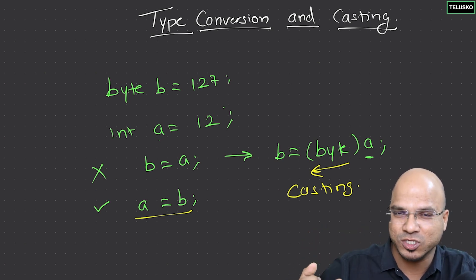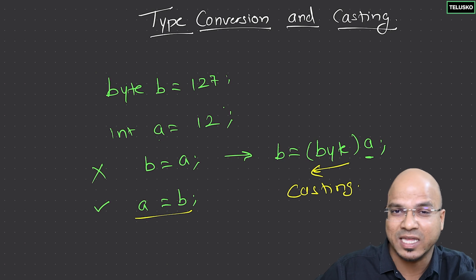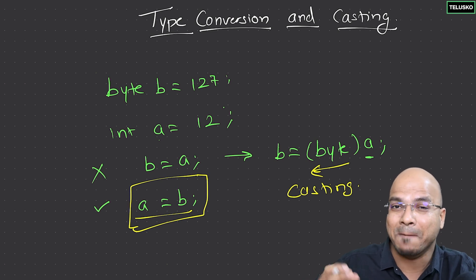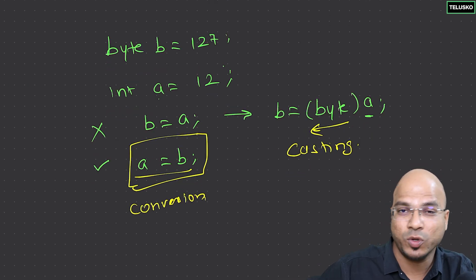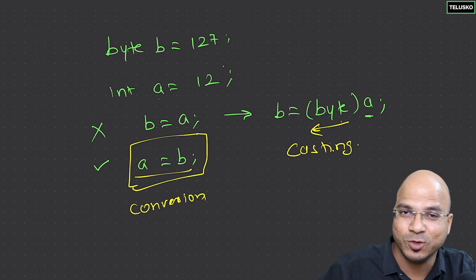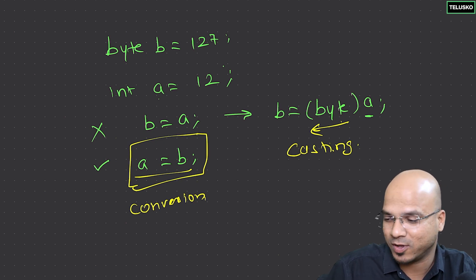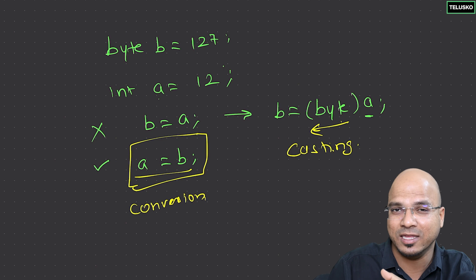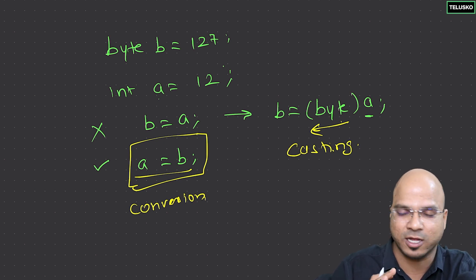When you do explicit conversion it is called casting; when it happens automatically it is called conversion. For example, assigning a byte value to an integer variable is an implicit conversion — it becomes an integer automatically. Now, can you do this with anything? Not exactly. You can't store a character value into a boolean, since boolean only supports true and false. But anything in the range of integer, float, double, and long works.